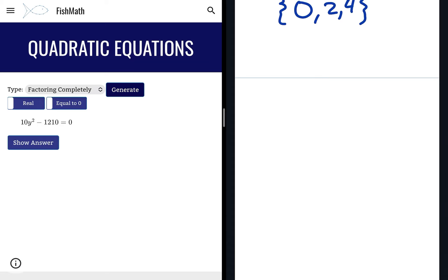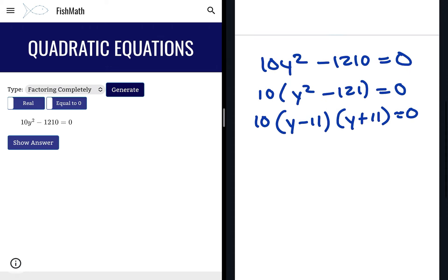This one is actually a difference of perfect squares with a GCF again. There's a 10 out front of the y² minus this very large number. If we take the 10 GCF out, we get y² - 121. And that we just factor as a difference of perfect squares: (y - 11)(y + 11).